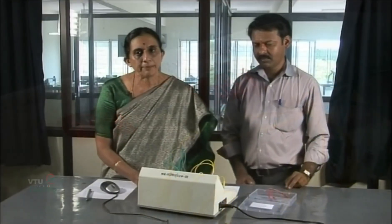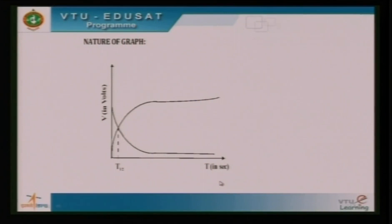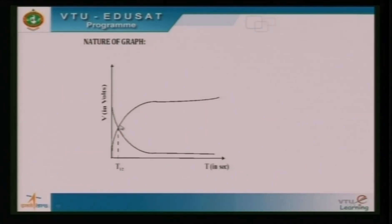Now we are done with the experimental part and we have to calculate the dielectric constant by plotting a graph of voltmeter readings along the y-axis and time along the x-axis. We have two exponential curves which intersect at a particular point called the half-time. Half-time is the time during which the quantity of charge on the capacitor gets reduced to half its initial quantity. This value is to be noted down from the graph.